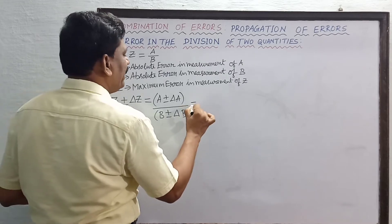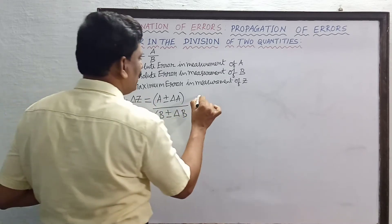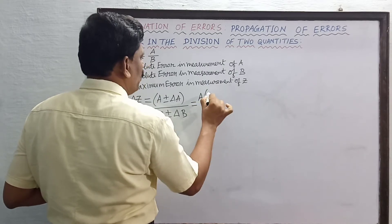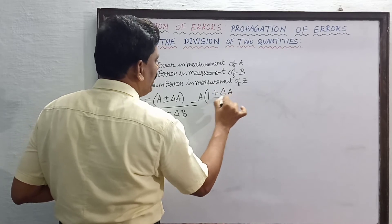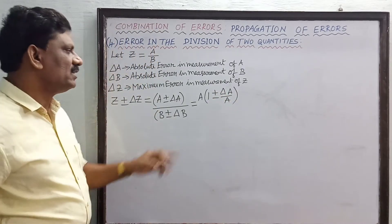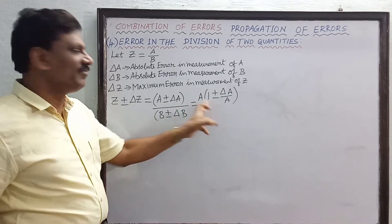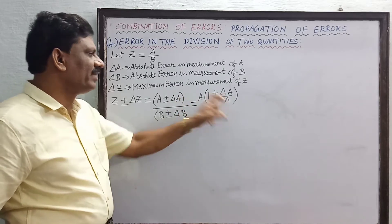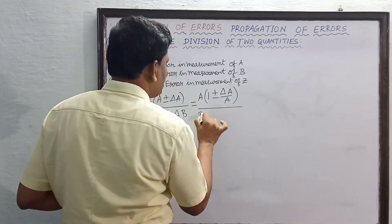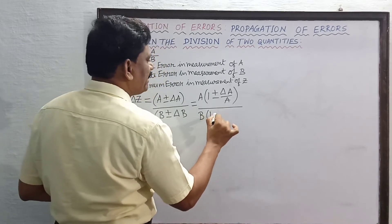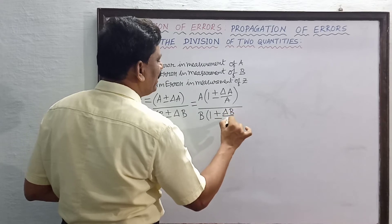Now I will rewrite this by taking a as the common factor in the numerator: a into 1 plus or minus delta a by a. So inside the bracket the first factor is 1 plus or minus delta a divided by a. Similarly, in the denominator, b is taken as the common factor, so that inside the bracket it will be 1 plus or minus delta b divided by b.